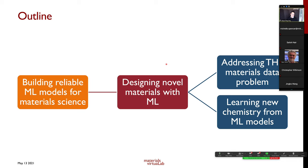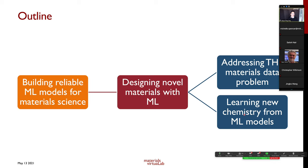The outline for the rest of my talk: first, how do we build reliable machine learning models for materials science? Then I'll show examples where we've designed novel materials with machine learning that have been confirmed and synthesized in the lab. Finally, I'll discuss how to address the materials data problem — data scarcity and heterogeneity — and how we can learn new chemistry from machine learning models.